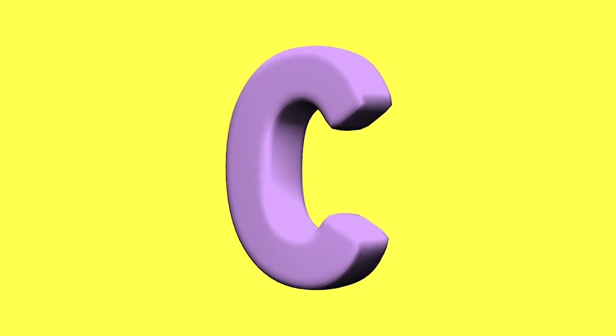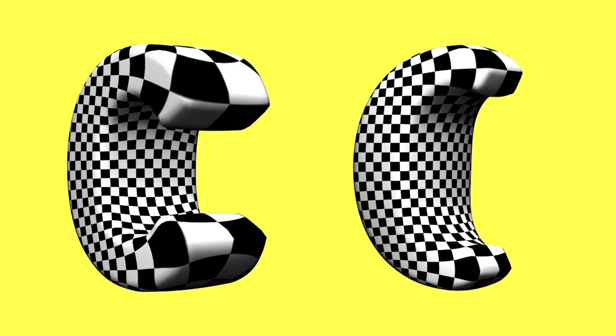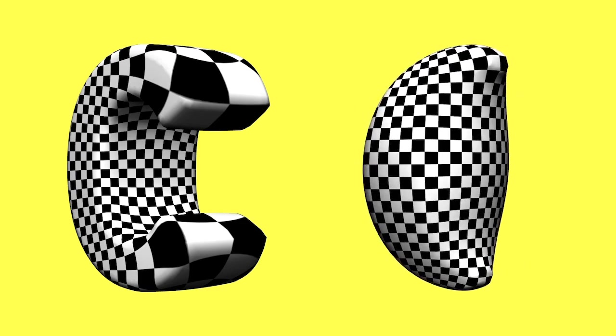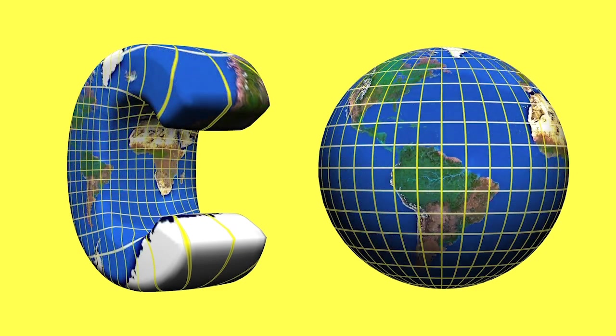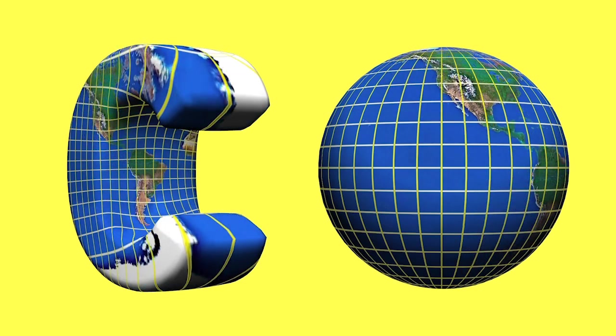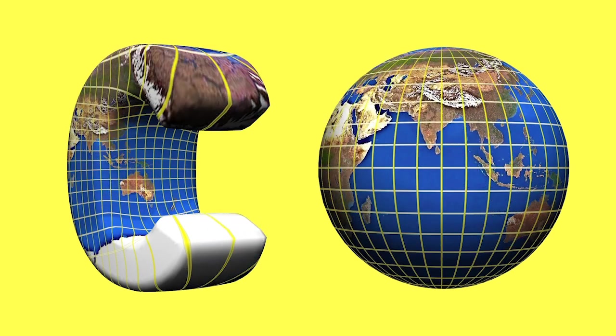Up till now we have considered conformal maps of planar regions. We turn now to consider conformal maps of closed surfaces in three-dimensional space. This inflated letter C, for example, maps conformally onto a sphere. Here we rotate the globe while holding the letter fixed. Notice that the two arms of the C behave like magnifying glasses.